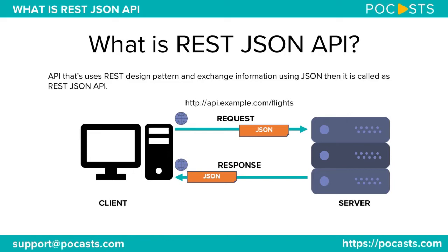So REST JSON API is just a term to show that REST API is used to exchange messages and the message format is JSON. There's nothing special about it — it's three different topics combined together to show the representation of how messages are exchanged from one system to another system.